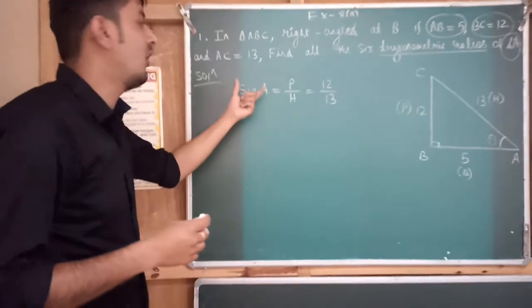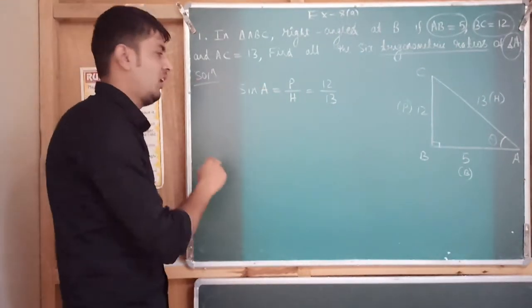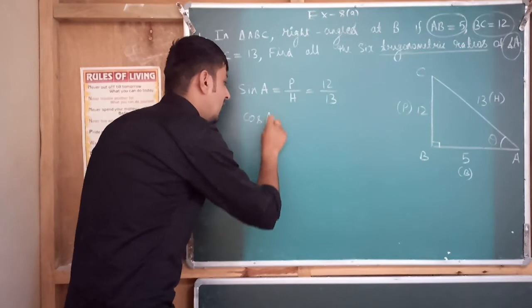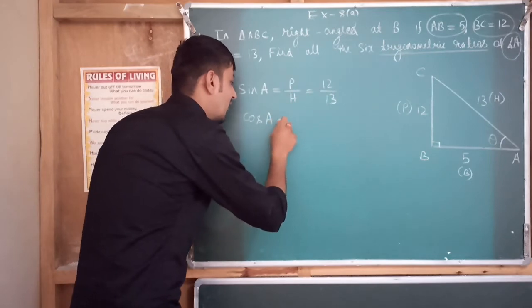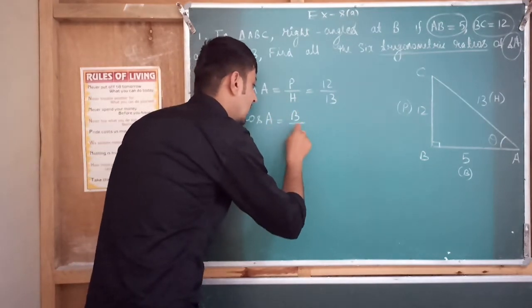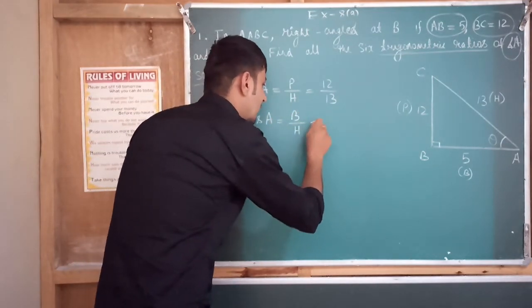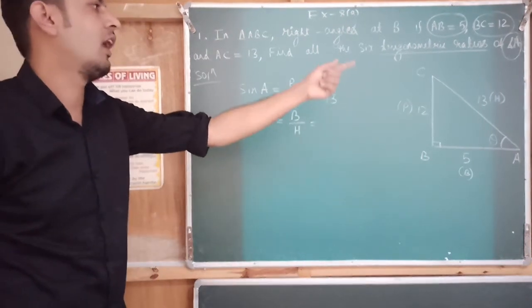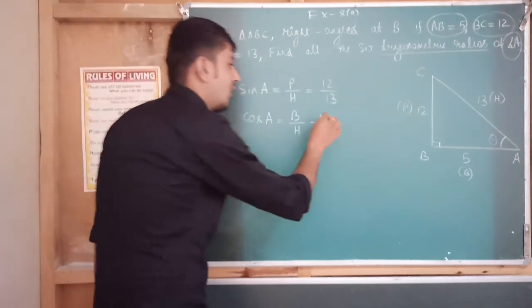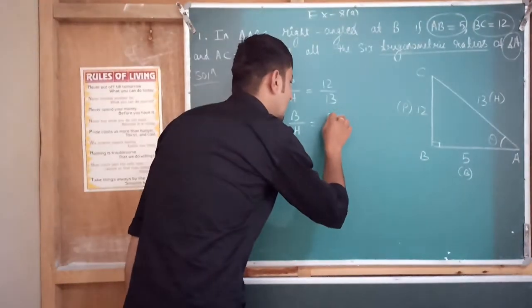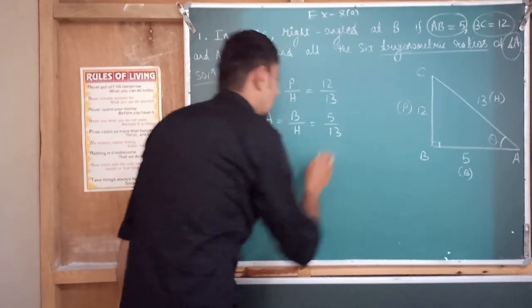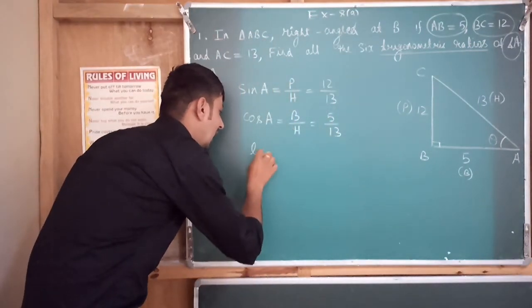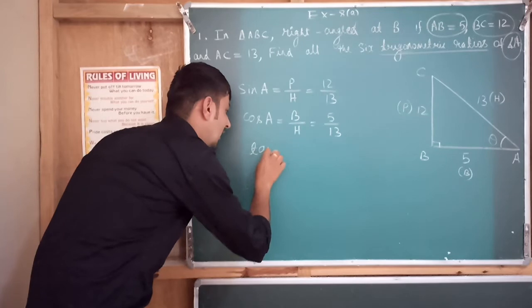Similarly, cos A equals base over hypotenuse (B/H). The base is 5 and the hypotenuse is 30, so cos A equals 5 over 30.